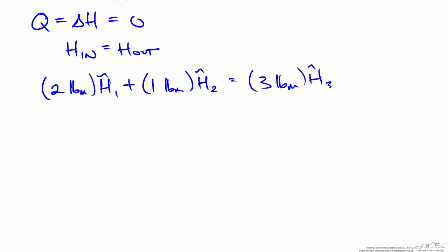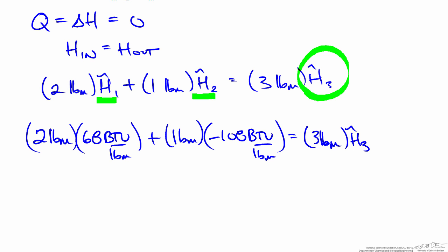Going back to the energy balance that we set up, we now have values for both H1 and H2, which we can use to solve for the specific enthalpy of the mixture. Plugging in the values from the enthalpy diagram, we can calculate the value for H3, which I find is 9.3 BTUs per pound. So we know the specific enthalpy of the mixture. We also know the concentration from the mass balance was 0.2. We can use the enthalpy-concentration diagram to find at what temperature an H2SO4 solution of 20 mass percent equals 9.3 BTUs per pound.